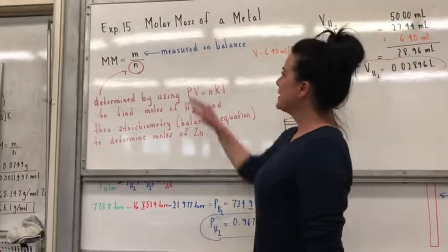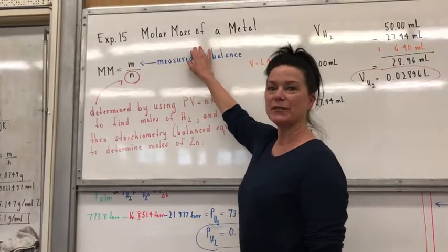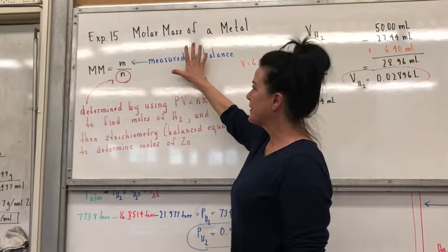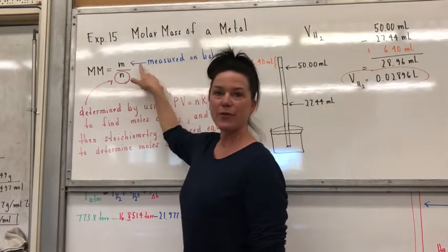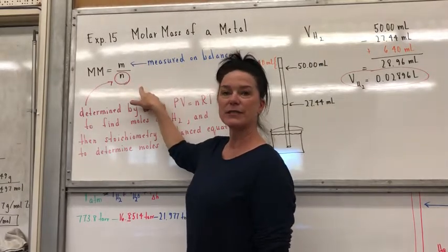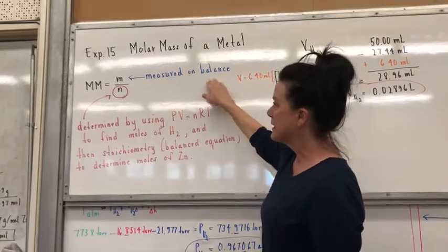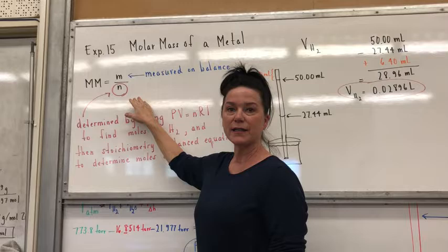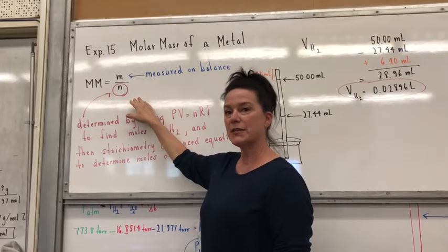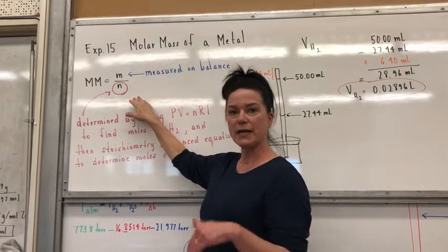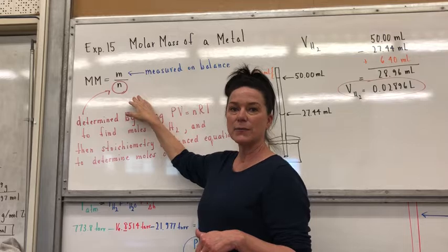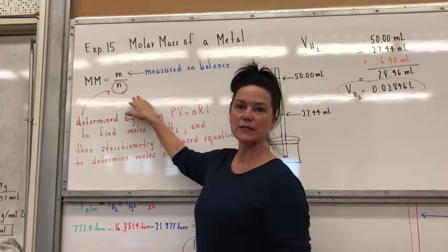Okay, so experiment 15, molar mass of a metal. To figure out the molar mass we need to have both the mass and the number of moles of the same sample. The mass is using, you get that on the balance, but the number of moles we're going to determine indirectly by using PV equals nRT to determine the number of moles of hydrogen, and then the balanced chemical equation to figure out how many moles of zinc that is.